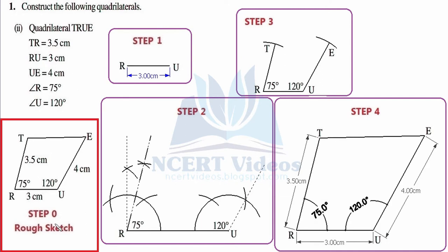Hence we construct our rough sketch, also termed as step number zero. With the help of a ruler we construct line segment RU, put its measurement as 3 centimeter. At R we need to construct 75 degrees — since 75 is less than 90 degrees, we use the protractor and mark 75 degrees. At U we put a marking at 120 degrees, which is greater than 90 degrees, so we consider the other side of the protractor and mark 120 degrees.